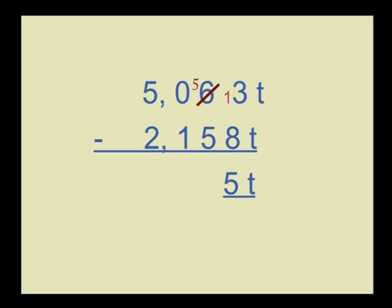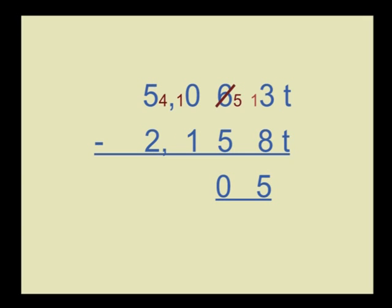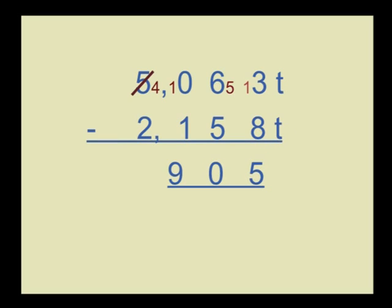Our new number is now 13 in the units. 13 minus 8 is 5. We now start subtracting the tens and we can subtract 5 from 5, which leaves 0. We move next to the hundreds. We see that again we cannot subtract 1 from 0, so we go borrow from the thousands. The thousands remain now with 4, but the new number in the hundreds is now 10.